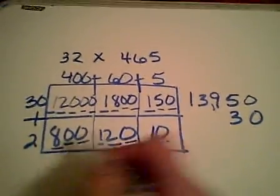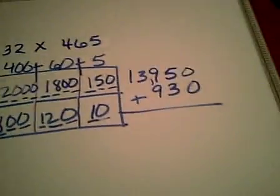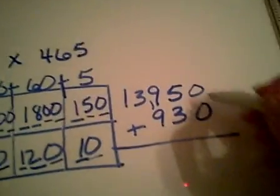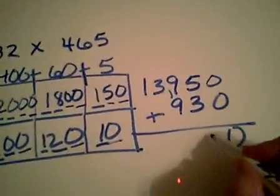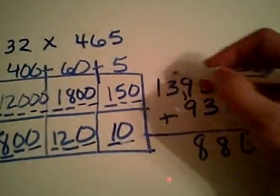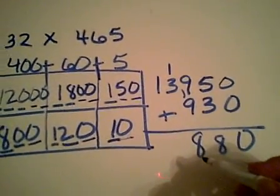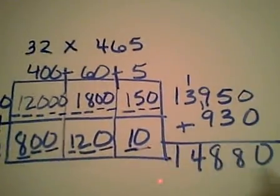Now I add the two rows, zero plus zero, zero. Five plus three, eight. Nine plus nine, 18. Three plus one, four. One.